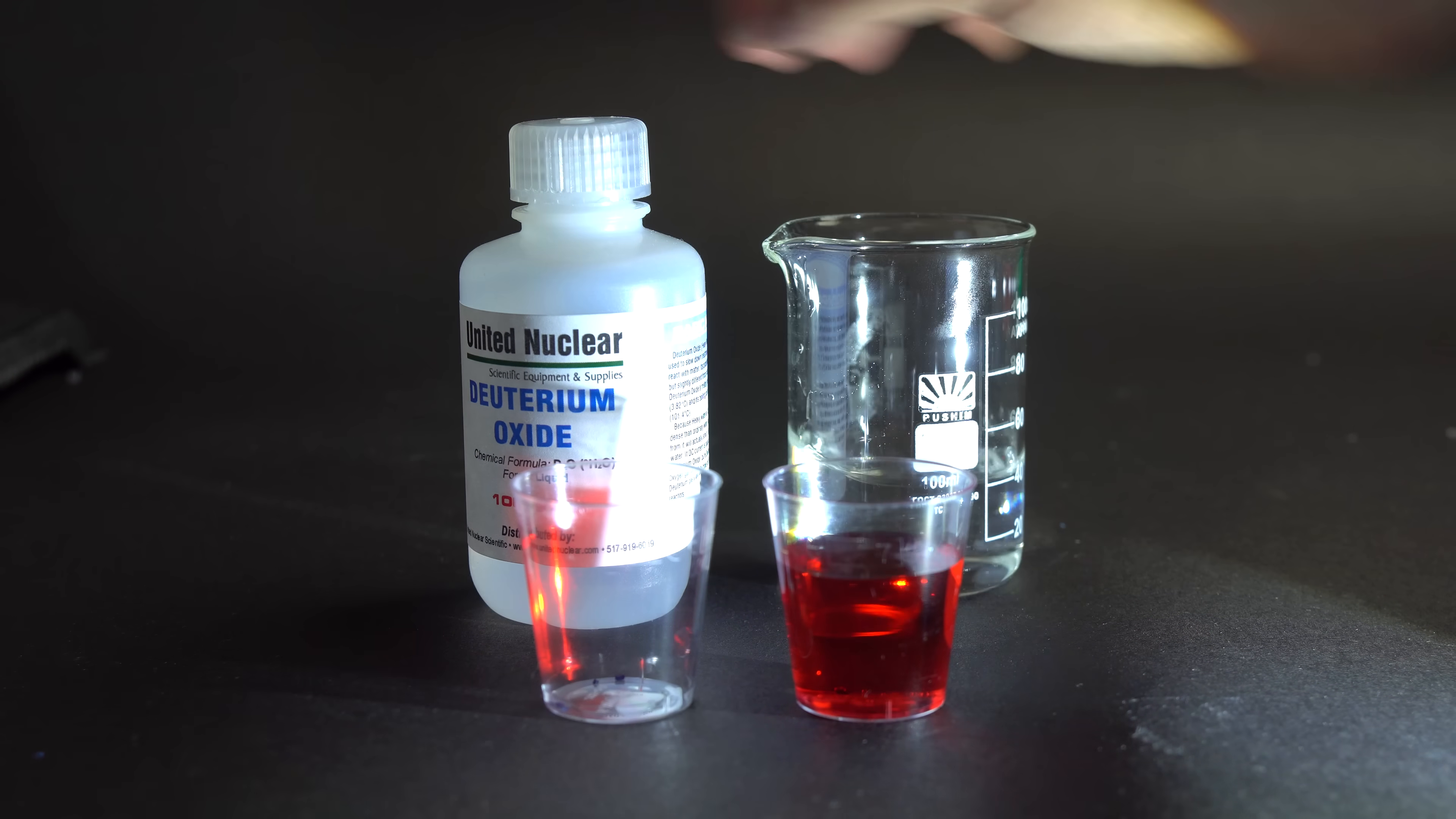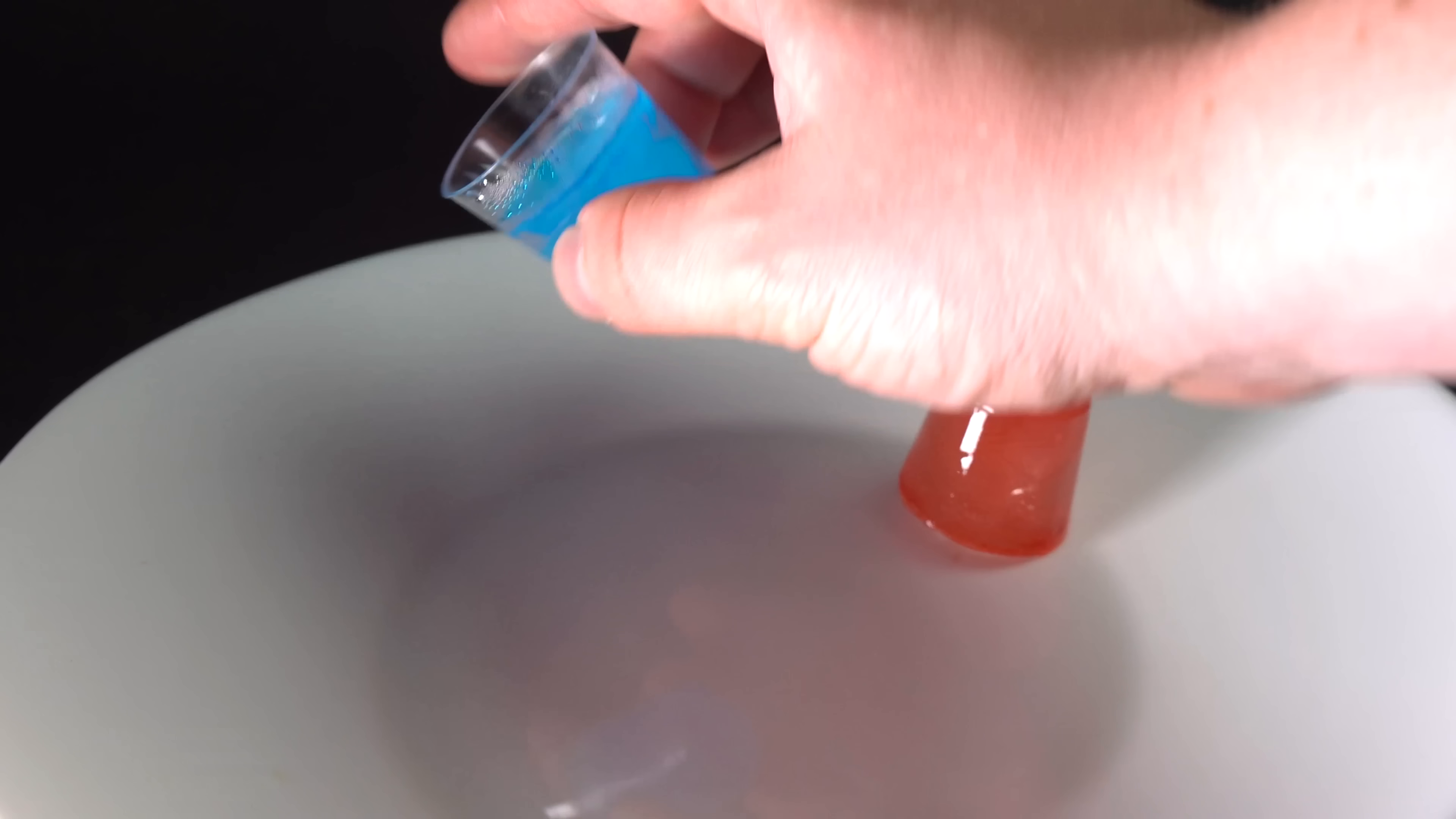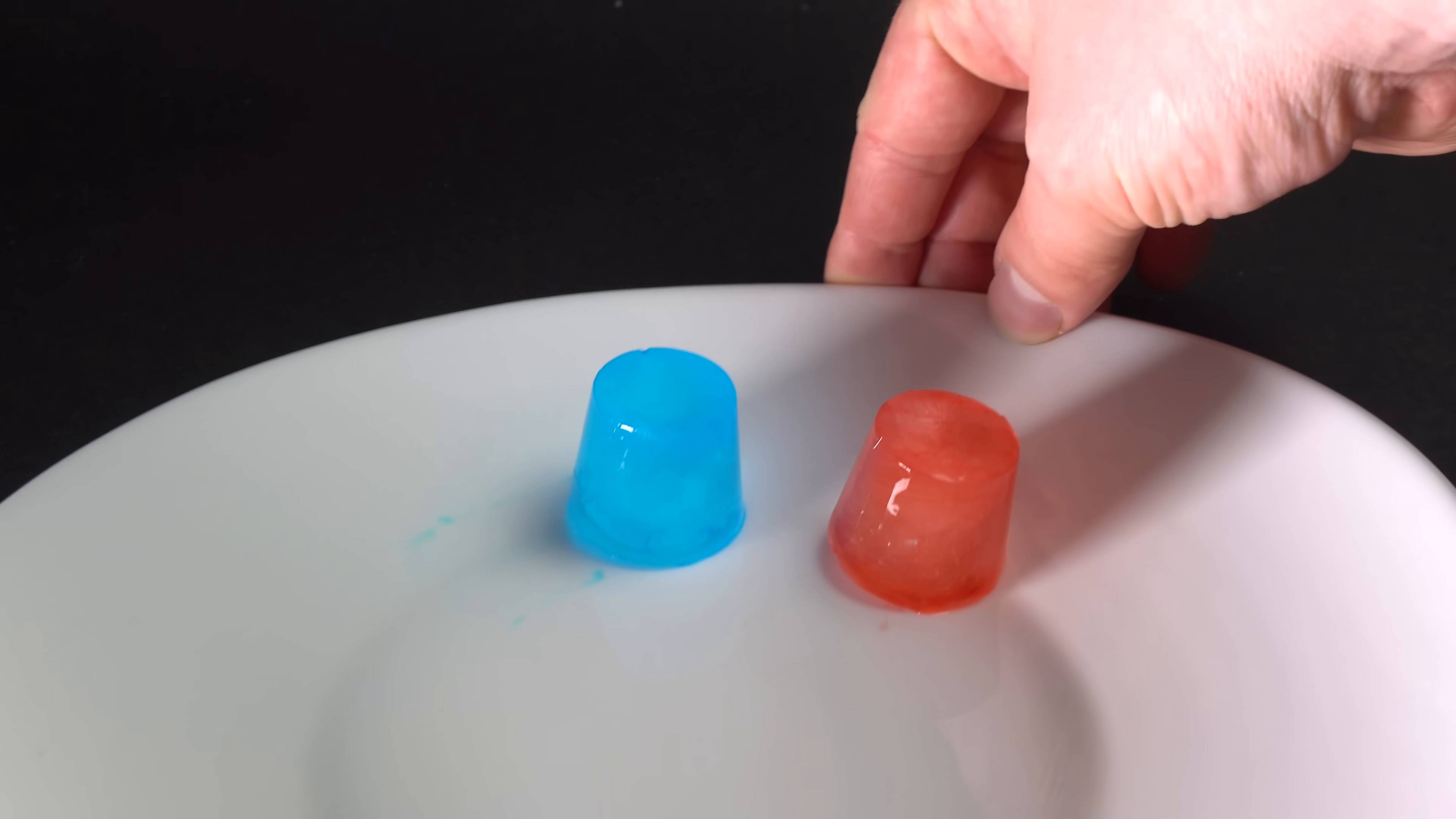One more difference between deuterium oxide and hydrogen oxide is that heavy water has a slightly higher melting point. For this experiment, I have filled two beakers with an equal amount of water, one with heavy water, the other with regular water. I have dyed distilled water red and heavy water blue in order to better distinguish them.